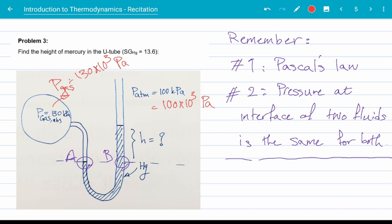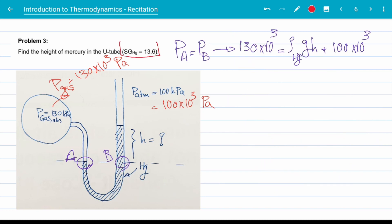Now Pascal's law says P of point A is equal to P of point B because they are on a horizontal line inside mercury. From point two, we know that P A is also equal to the P of the gas in the tank. P B on the other hand is the pressure of atmosphere plus the column of mercury.